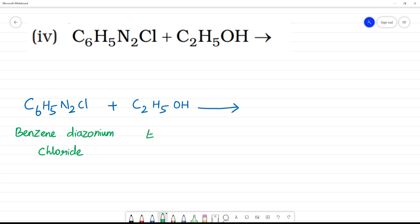This is a better leaving group. N2Cl is the better leaving group. This reaction is replacement by hydrogen. N2Cl group is replaced by hydrogen, so N2Cl is replaced by hydrogen.